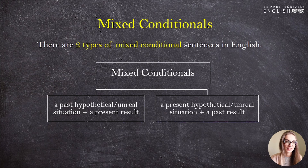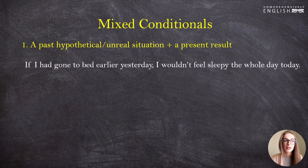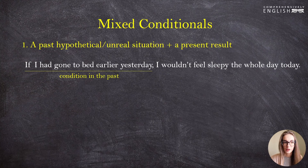Mixed conditionals are divided into two types. The first is when we have a past hypothetical or unreal situation plus a present result. The second is when there is a present hypothetical situation and a past result. We'll start with the first case: a past hypothetical situation and a present result. For example: 'If I had gone to bed earlier yesterday, I wouldn't feel sleepy the whole day today.' The condition is in the past and the result is in the present.